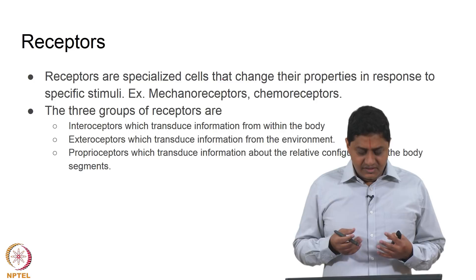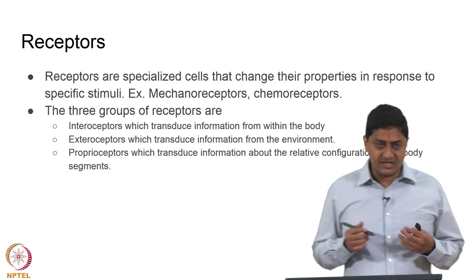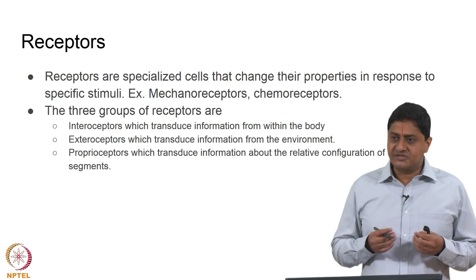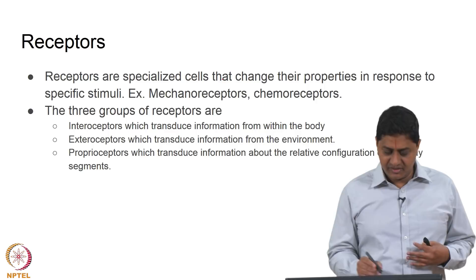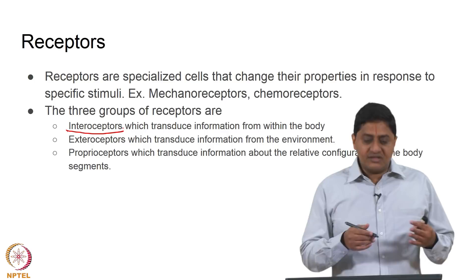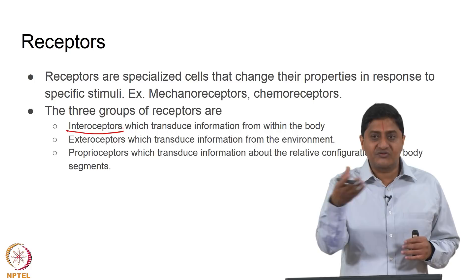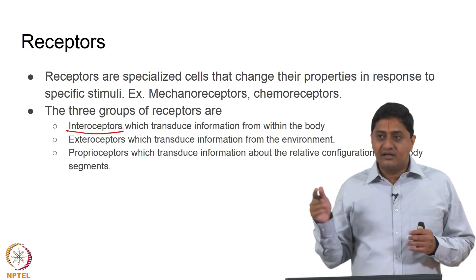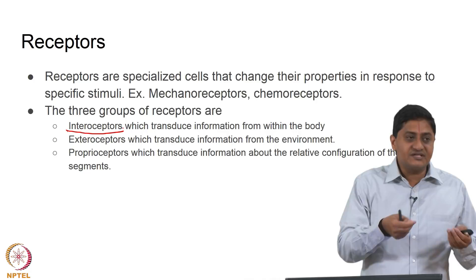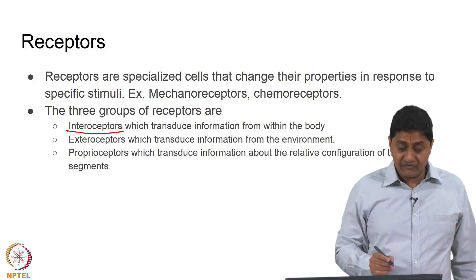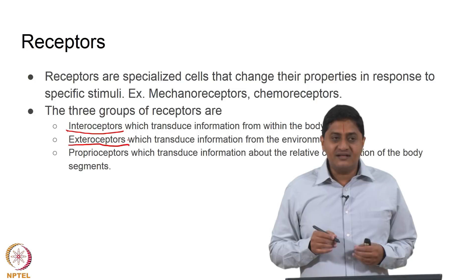We can classify receptors into three major types. Those sensors that give information about what is happening within the body are called interoceptors. Those that give information about what is happening outside the body — what I can see, what sounds I can hear from the environment — are called exteroceptors.